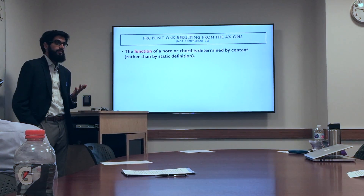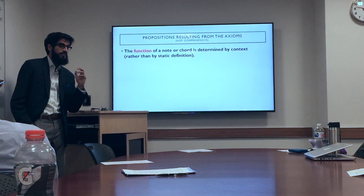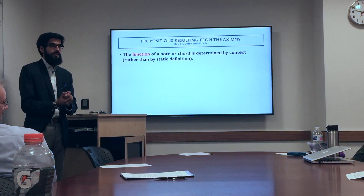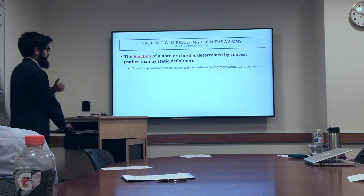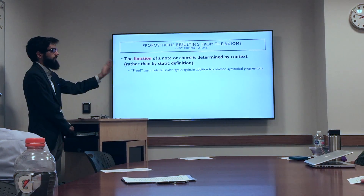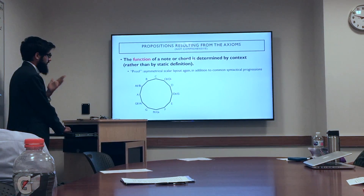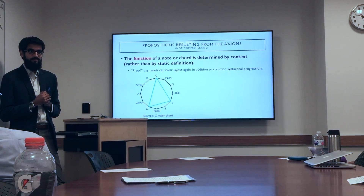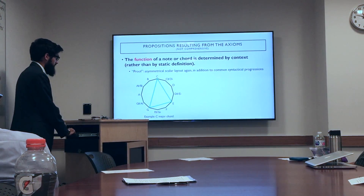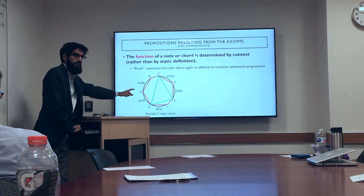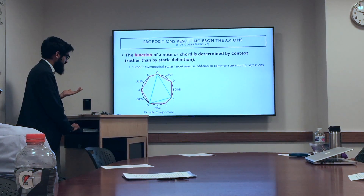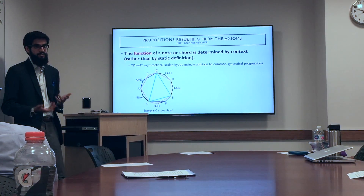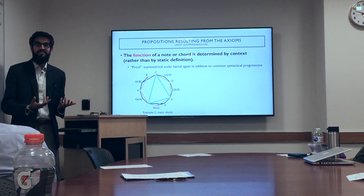Another proposition is that the function of a note or chord is determined by context. Given any particular chord — say a C major chord — you cannot tell me what key we're in absent context, because that chord exists in a number of different keys. Here's the chromatic scale with a C major chord. It could exist in C major; it could also exist in F major; it could also exist in G major; and it could exist in a number of minor keys as well.